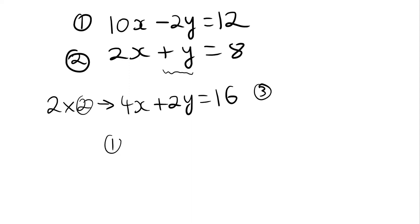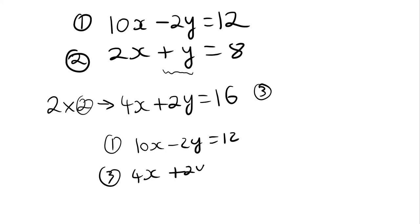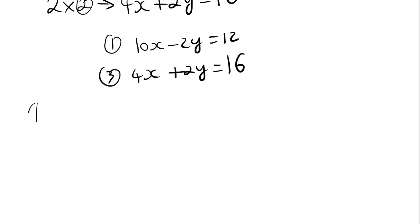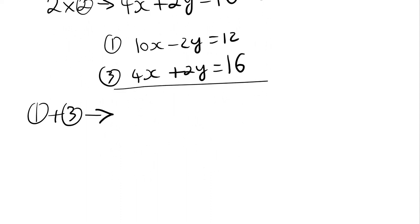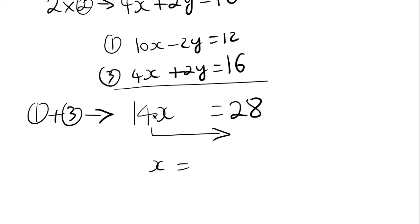We have equation 1: 10x minus 2y equals 12, and equation 3: 4x plus 2y equals 16. I'm going to add these equations because the signs in front of the y's are different — different signs, we add. So: 10x plus 4x is 14x, minus 2y plus 2y is 0, and 12 plus 16 is 28. Dividing by 14 gives me x equals 28 divided by 14, which is 2.